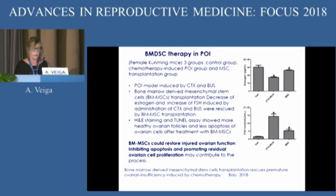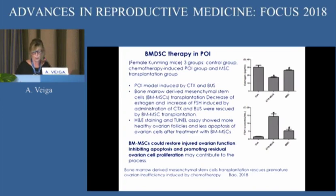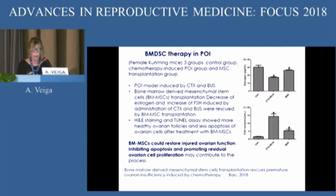I have brought four papers examining the role of bone marrow stem cells in restoring ovarian function. This work was done in the mouse, and the results from a 2018 paper — not the highest impact papers — show that these cells are able to restore injured ovarian function by inhibiting apoptosis and promoting residual ovarian cell proliferation. That may be the mechanism of action behind these preliminary results in the mouse model.